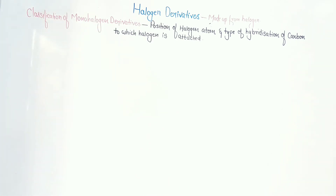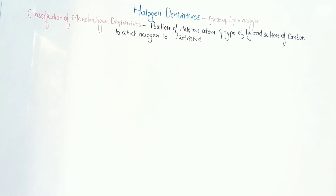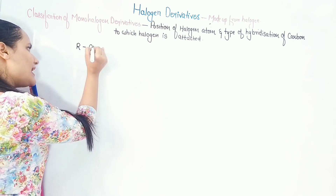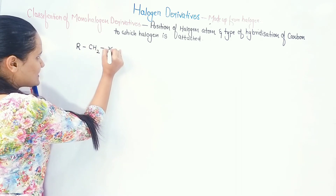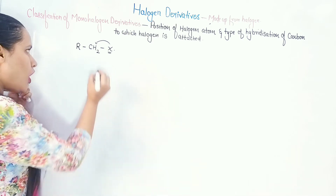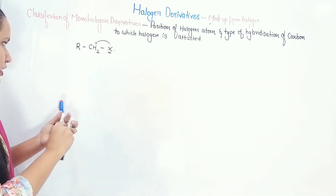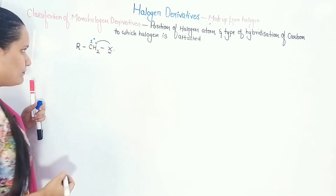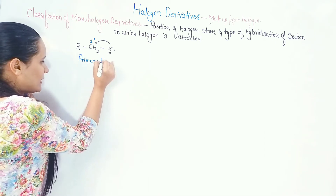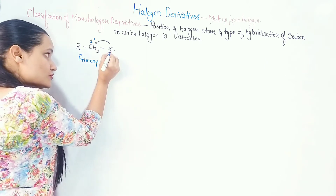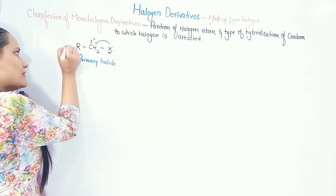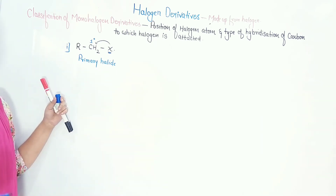What is a primary alkyl halide? If I have R-CH2-X, my halogen is attached to this carbon, and this carbon is attached to only one other carbon. We call this a one-degree carbon, and this is called a primary halide. In a primary halide, the halogen is attached to a carbon that is bonded to only one other carbon.